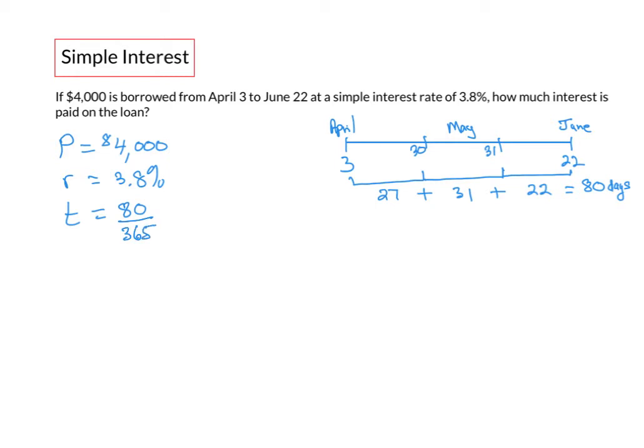Now you might be asking, what about leap years? Well, since our timeline is from April 3rd to June 22nd, February is not part of that timeline, and leap years will only impact February. You add another day if your timeline goes through February in a leap year.